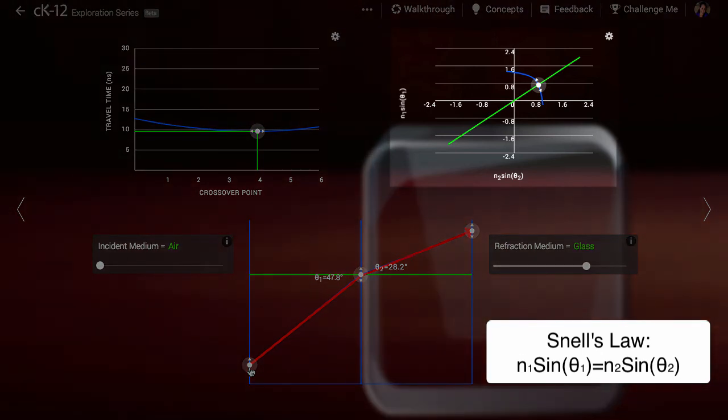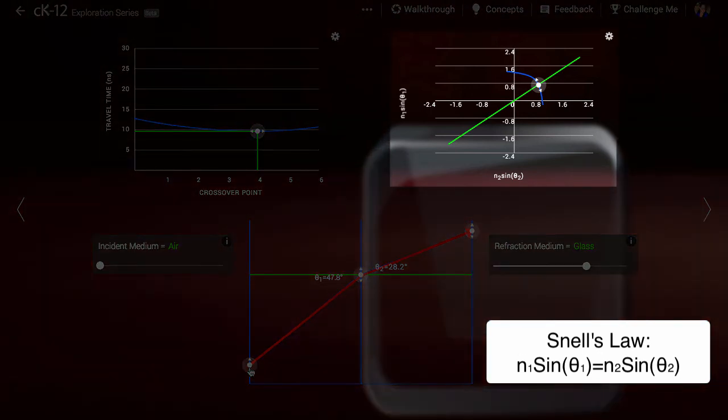The graph at top right is a plot that represents Snell's law. As you can see, the plot has the quantity n times the sine of an angle as the scale of each axis.